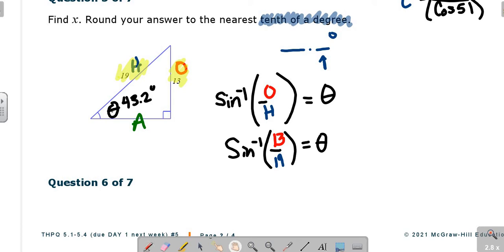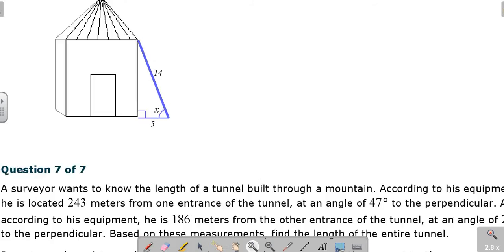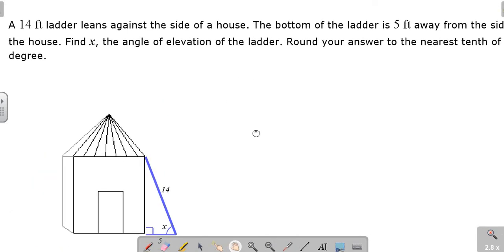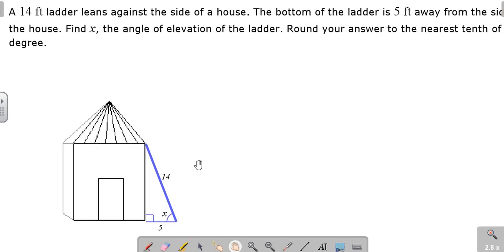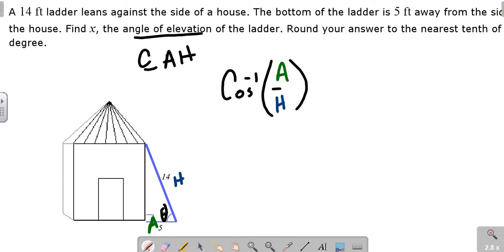Taking a look here at our next one. It says a 14-foot ladder leans against the side of the house. Bottom of the ladder is 5 feet away. Find X, which is the angle of elevation of the ladder. So there's our theta. 5 would be the adjacent, 14 would be the hypo. I have an AH combo. So we write cosine, inverse cosine, adjacent over hypo equals theta. Looks like this: inverse cosine, adjacent is 5, hypo is 14, is our angle theta.